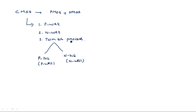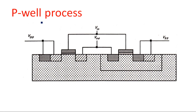Let us recall the P-well fabrication process. In the P-well fabrication process, the final outcome is a structure where the P-well is created on an N-type substrate. We first consider the N-type substrate, and then diffuse the P-well into it. The P-well is for the creation of the NMOS transistor, and the N-type substrate is for the creation of the PMOS transistor. The PMOS transistor is connected between VDD and the output — VDD is connected to the source terminal and the drain is connected to the output.